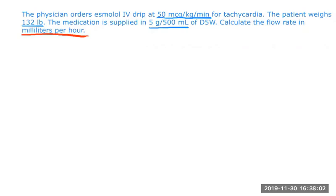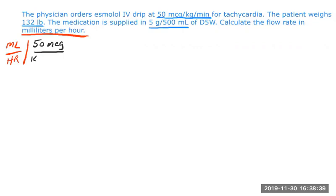We're going to start with what we want, which is milliliters per hour. I put that there so it tells me what order and where I need to put the rest of my numbers in this problem. We have ordered 50 micrograms per — and the word 'per' always means divided by — kilograms per minute.